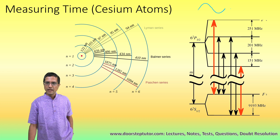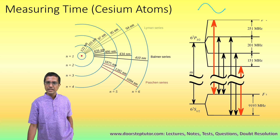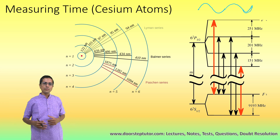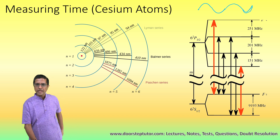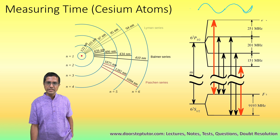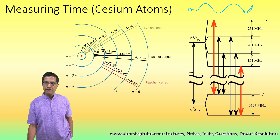This is one time period of the wave emitted from the cesium atom. There can be many such time periods put next to one another. How many time periods do we actually put together? If we put about nine billion...